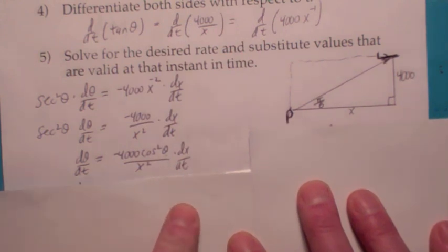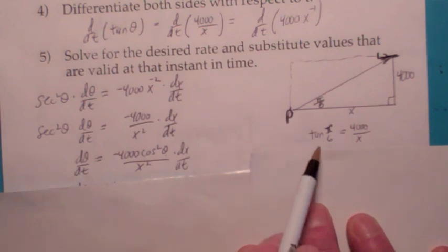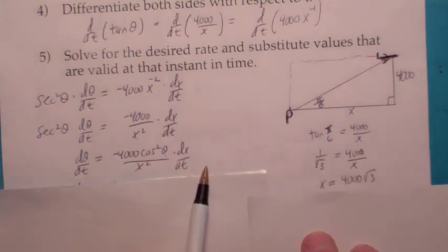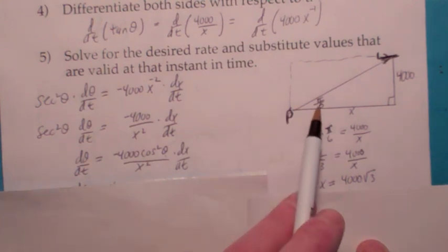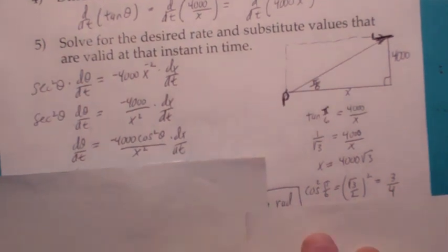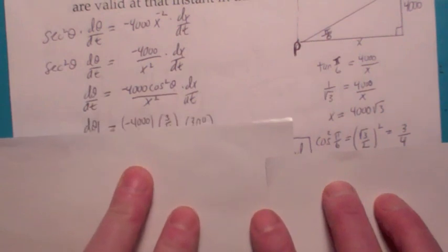So how do you find x? Well, you know that the tangent of pi over 6 is 4,000 over x. The tangent of pi over 6 is 1 over square root of 3. So when you cross multiply, you got x is 4,000 times the square root of 3. We also have to find the cosine squared of theta. The cosine of pi over 6 is radical 3 over 2, so cosine squared of pi over 6 would then be 3 fourths.